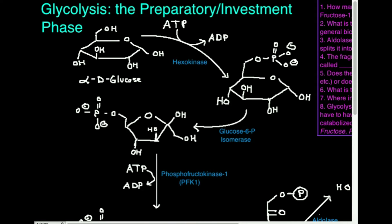Instead of looking at this from a strict organic perspective, or energy, or thermodynamics — all that stuff that makes things confusing — we're just going to look at this from a structural and very logical visual way, so that hopefully this will make sense. The two main parts of glycolysis are generally called, number one, the preparatory or investment phase, and the second part is the payoff phase.